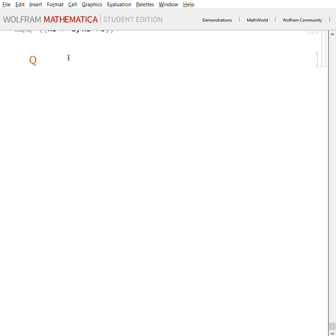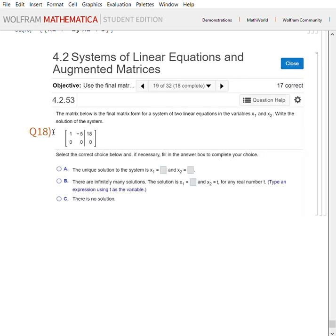Hello guys, welcome to another video. In this video we're going to be doing some systems of linear equations and augmented matrices. So let's go right ahead and start this question here, which is actually number 19. It says the matrix below is the final matrix form for a system of two linear equations in variables x1, x2. Write the solution of the system.